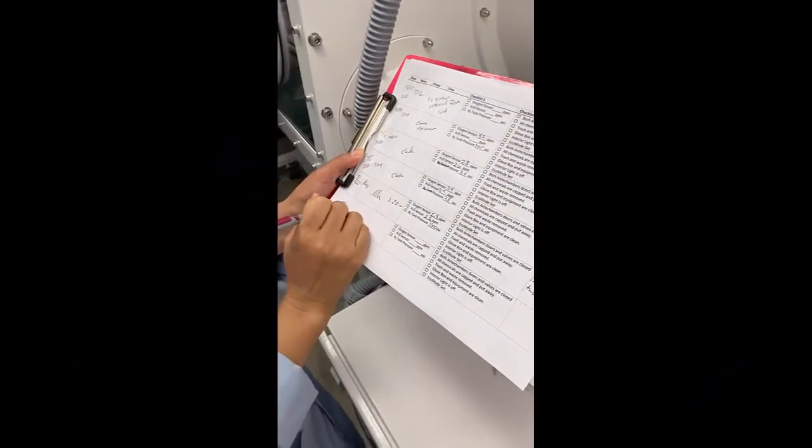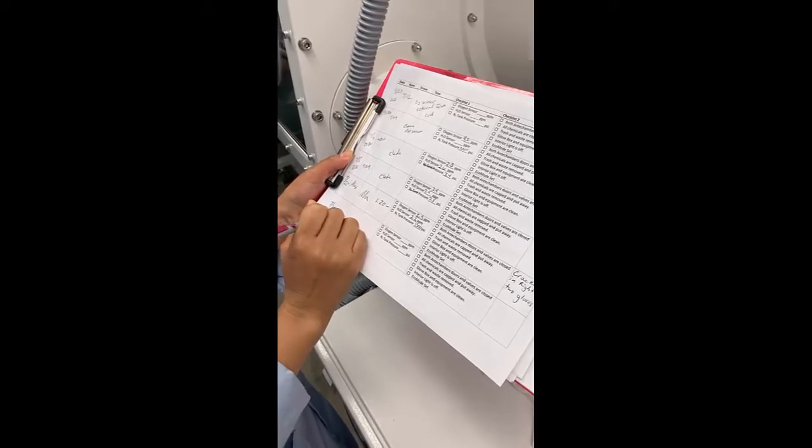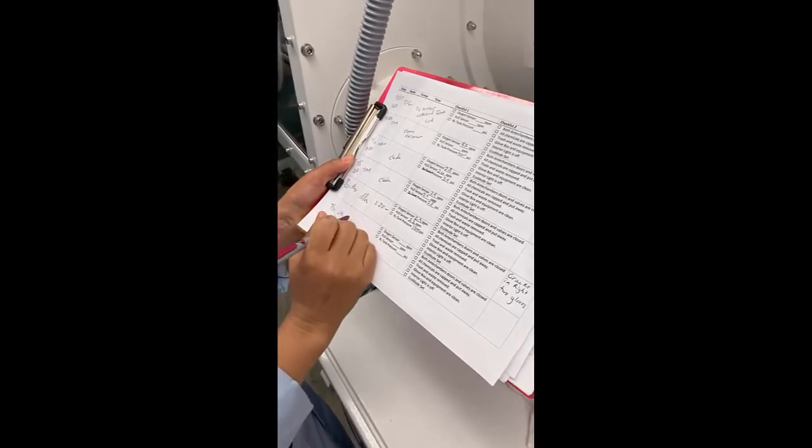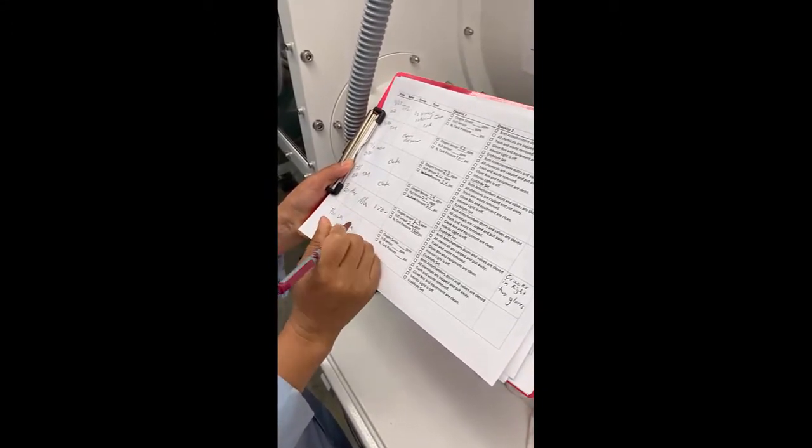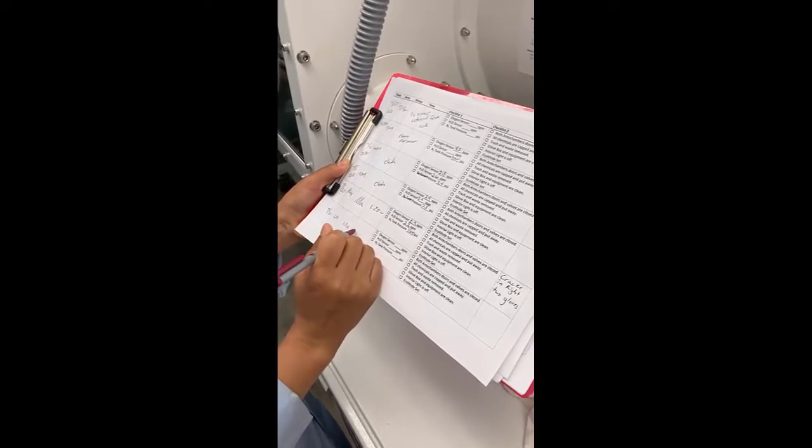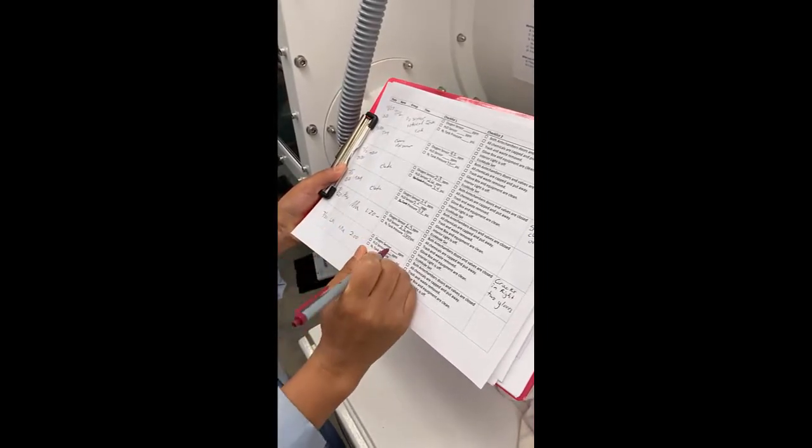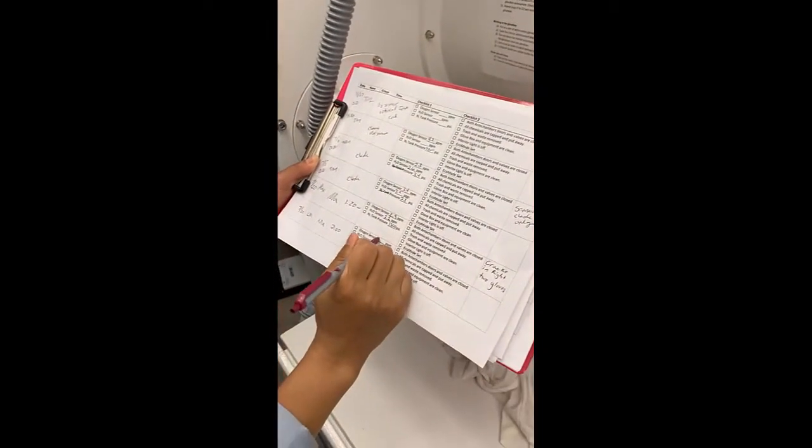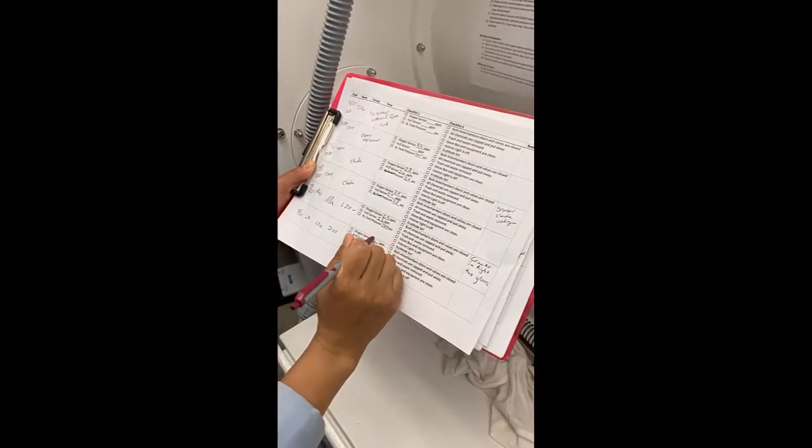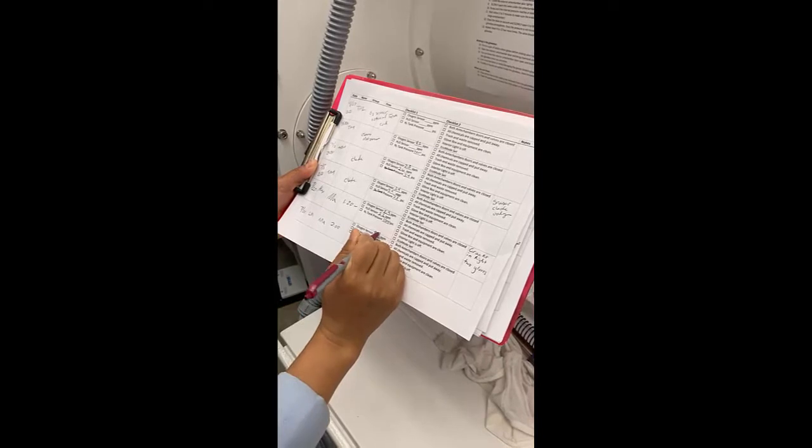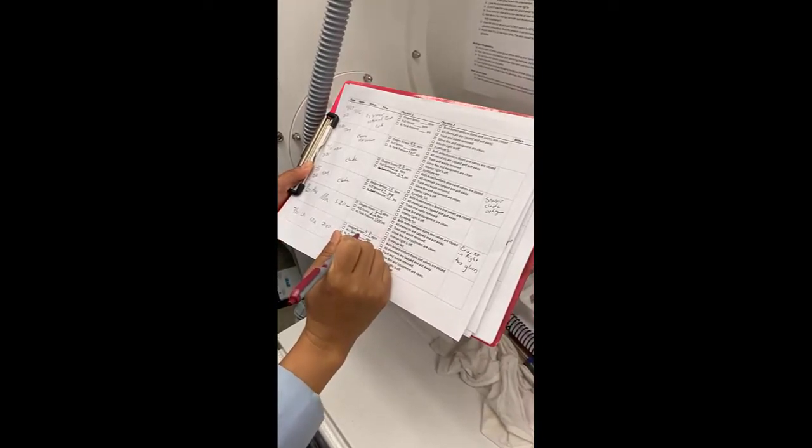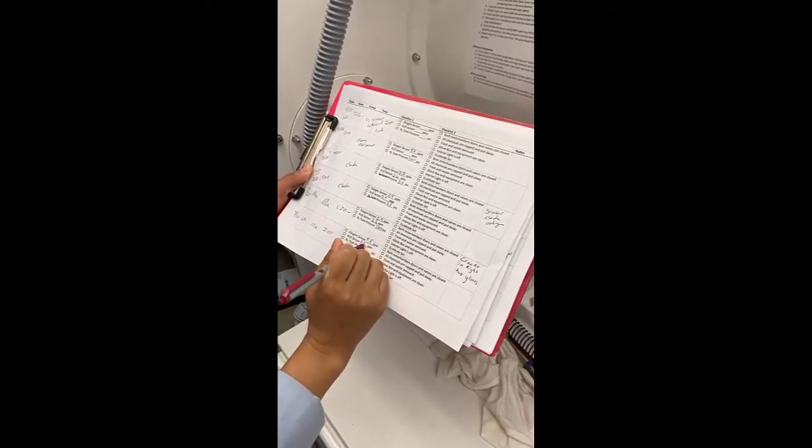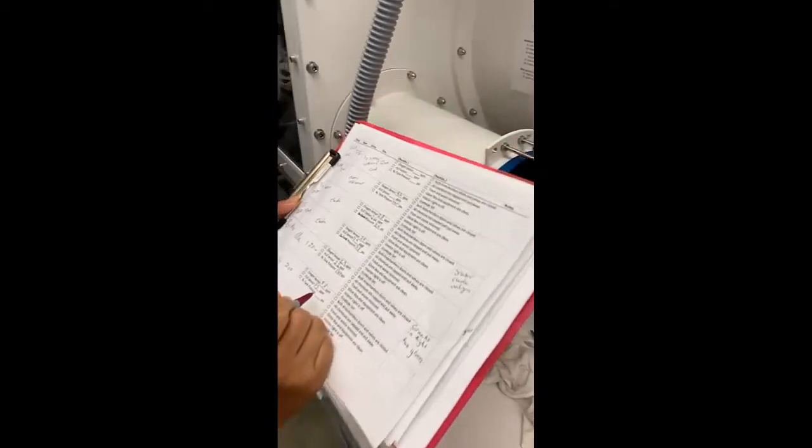So the first thing you need to do is fill out the check-in paper with the date, your name, the group, the time that you are entering the glove box, and the sensors - the H2O and the O2, and then the N2 tank pressure.